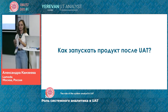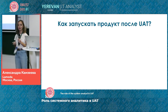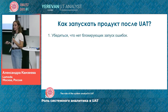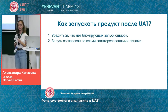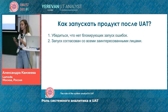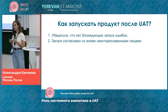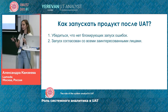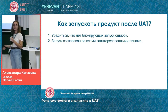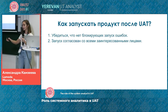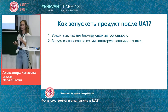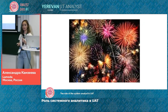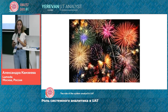So we have checked everything, we believe no mistakes are there, and we want to launch the product. We make sure there are no errors or mistakes that could block the launch. After that, we reconcile with all the stakeholders. If we have 10 business units participating — in retail it's the warehouse, delivery, call center — we need to convey this information to them so that they convey it to their employees. After that, we launch the product.